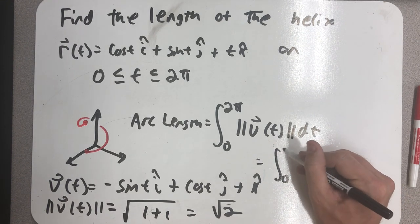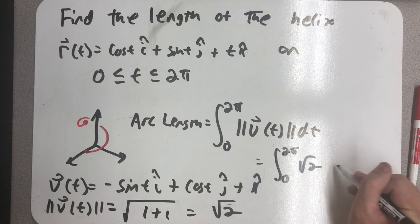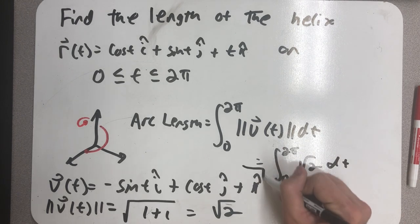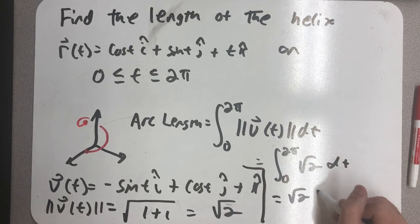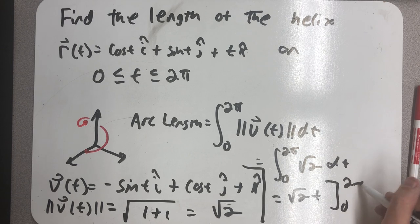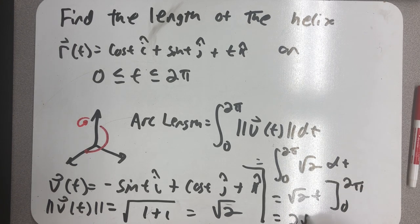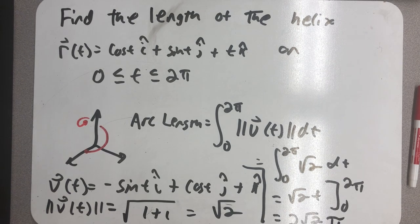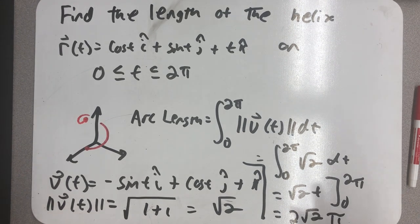I'm looking for an integral from 0 to 2 pi of root 2 dt. Well, that's root 2t from 0 to 2 pi. And so I get 2 root 2 pi. That's my arc length. 2 times the square root of 2 times pi.